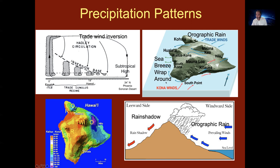There is also a sea breeze diurnal effect that occurs on the Kona coast of Hawaii. All these things combined result in different patterns: O for the orographic effect, TWI for the trade wind inversion, R for the rain shadow, and SB for the sea breeze wraparound — at different locations on the Big Island of Hawaii that explain the precipitation patterns shown.